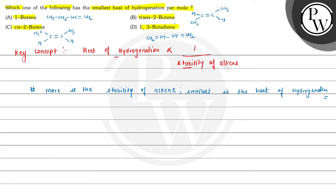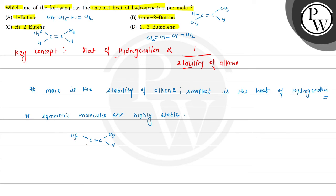Among the given molecules, symmetric alkenes are highly stable. In cis-2-butene, both CH3 groups are in the same direction, so repulsion takes place — that is why stability decreases. In trans-2-butene, both CH3 groups are in opposite directions, so there is less steric repulsion, which is why trans-2-butene is more stable.